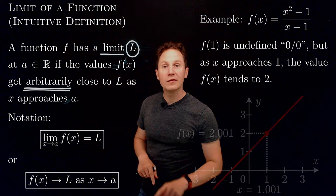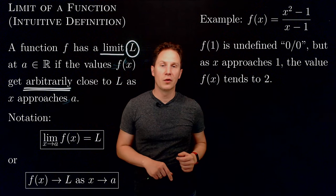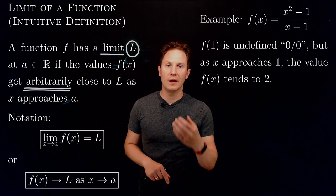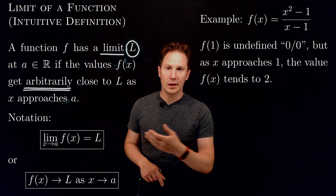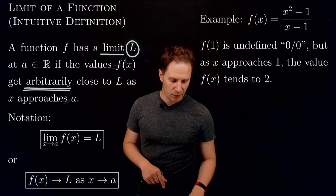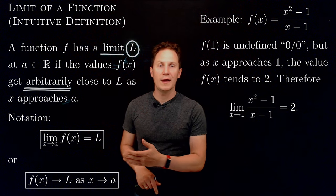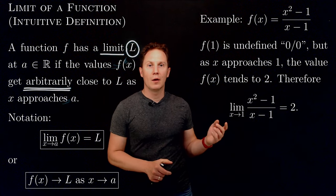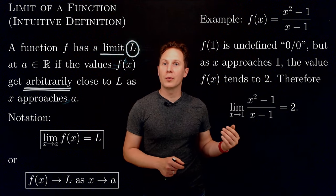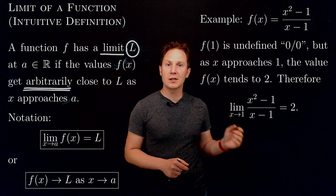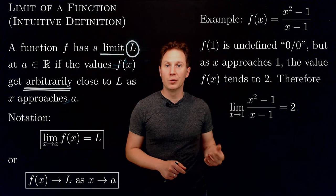With this definition and notation in place, we can return to our example and express what we saw using the notation. We can write that the limit as x approaches 1 of (x² - 1)/(x - 1) equals 2.